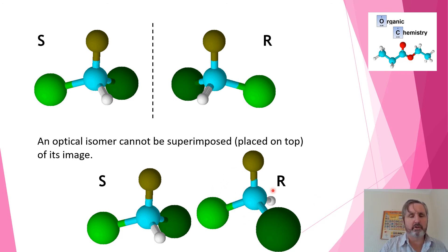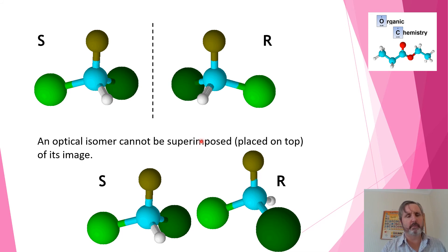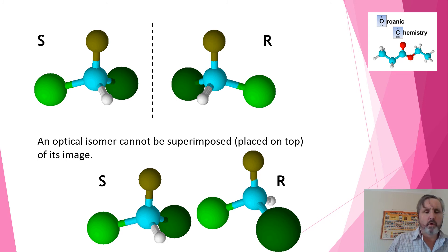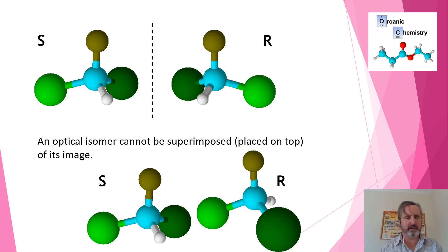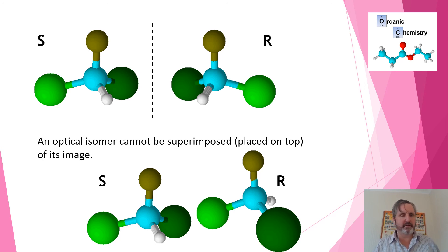It so happens that biological systems are specifically attuned to one of these types of isomers. So one of these isomers, if you were to take a medicine — let's say paracetamol — one version would work well, while the other might damage your kidneys. When they first made paracetamol, they got a mixture of it, and people would take the painkiller but then have kidney problems. They worked out it was just one of the isomers causing the problem, and the other one worked fine. So you try to make just one particular version of it.